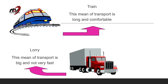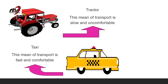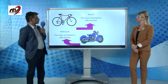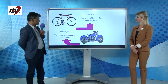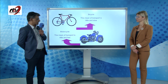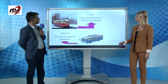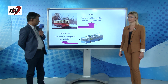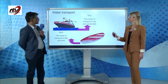We also have trains — this means of transport is long and comfortable. Lorries are big and not very fast. The tractor is slow and completely uncomfortable. A taxi is fast and comfortable. The bicycle is little and slow, the motorcycle is little and fast, the tram is long and uncomfortable, and the trolleybus is big and slow.